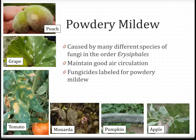Powdery mildew is very common, and in 2012 it was even more so — conditions were very good for its development, and we saw it beyond where we normally see it. It's very common to see it on zinnias and monardas. We also saw it on peaches — you can see a small fruit in the upper left with a white spot, which is powdery mildew. It is a common pest of grapes, visible in the venation. On tomatoes, using a hand lens, you'll see the white powdery substance, and then it starts turning into yellow chlorotic areas.